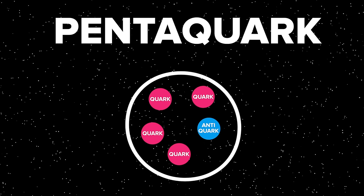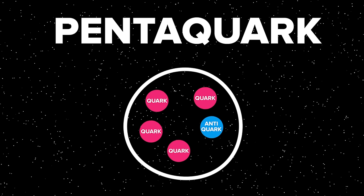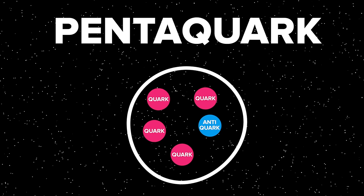A pentaquark is a particle containing five quarks, or more accurately, four quarks and an antimatter quark. A particle with these properties might have been discovered.